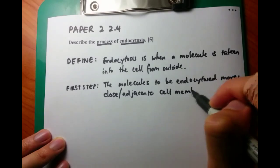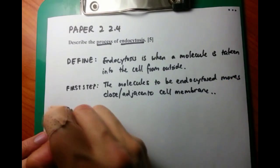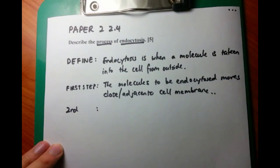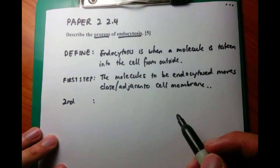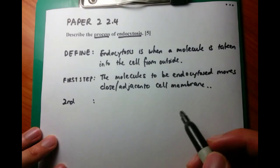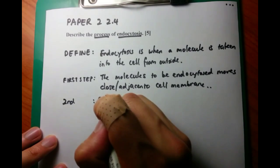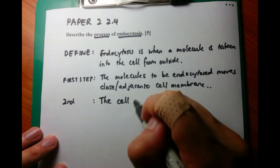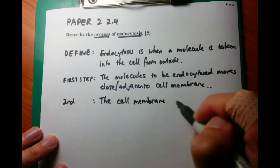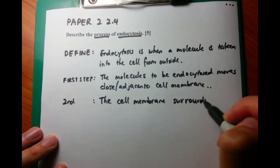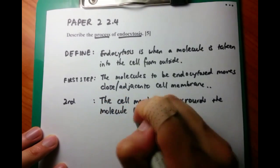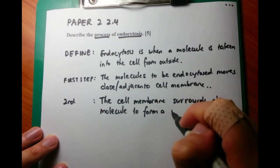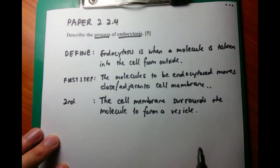After the molecule to be gobbled up comes close to the cell itself, the cell membrane moves around it to bring the molecule inside. The cell membrane surrounds the substance to form a vesicle, and the molecule travels inside the cell within the vesicle - this is the transport vesicle. That's the second step.